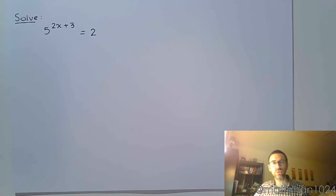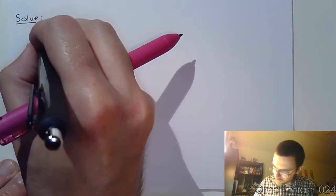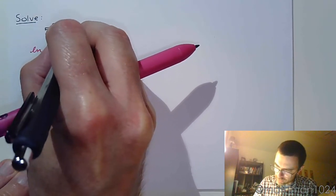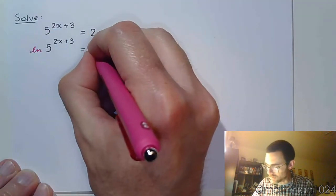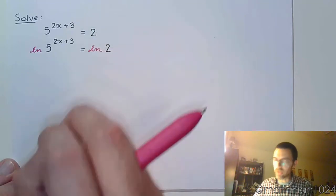Instead, let's use logs. Apply log on both sides. So I'm going to say the natural log of 5 to the 2x plus 3 is equal to the natural log of 2.